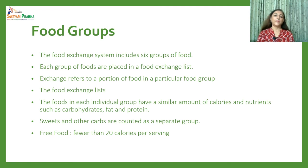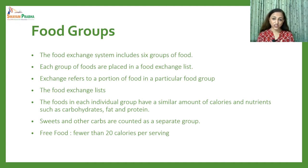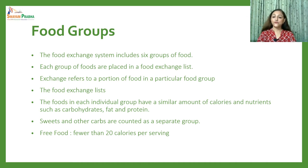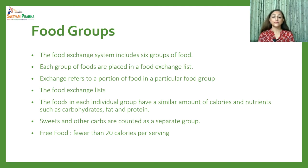This system contains six food groups, and each group is placed in one type of food exchange list. An exchange refers to one portion of food in that particular group. The food exchange lists are: fruits, vegetables, milk, starches, fats, and meats and meat substitutes. Sweets and other carbs are counted separately because they provide only empty calories. Free foods contain less than 20 kilocalories per total serving.